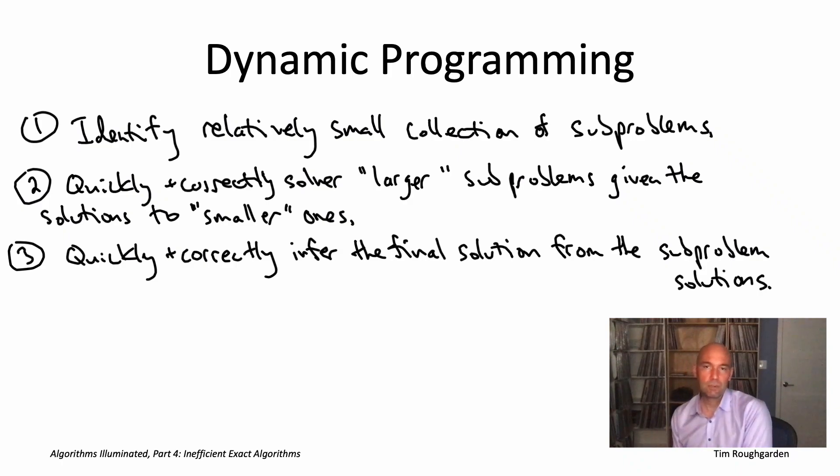Point being is once you have a collection of subproblems with all these properties, you're pretty much done. The dynamic programming algorithm just writes itself. You systematically solve all of the subproblems, starting with the easiest ones and ending up with the most difficult ones. Then you infer the final solution from your subproblem solutions. That last step is usually trivial, because usually the original problem is one of your subproblems. In many cases, the running time analysis of a dynamic programming algorithm is quite straightforward. For example, suppose that the number of subproblems you have is f(n), where n denotes the input size. This could be linear in n, or quadratic in n, or even worse.